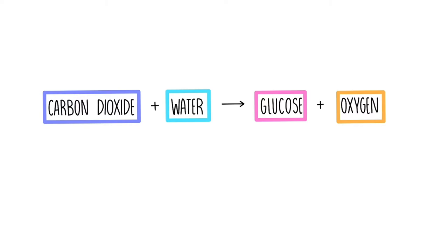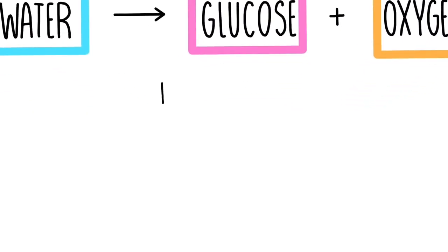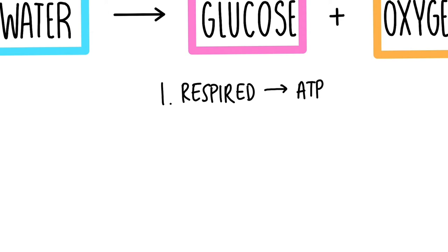Basically, instead of eating, this is the process that the plant is carrying out. You need to know what happens to that glucose, and there are three things that could happen. One, it could be respired to generate energy in the form of ATP — so if it needs energy straight away, that's something that could happen. The second thing is that it could be stored. And because we're dealing with plants, it's going to be stored as the energy storage molecule in plants, which is starch.